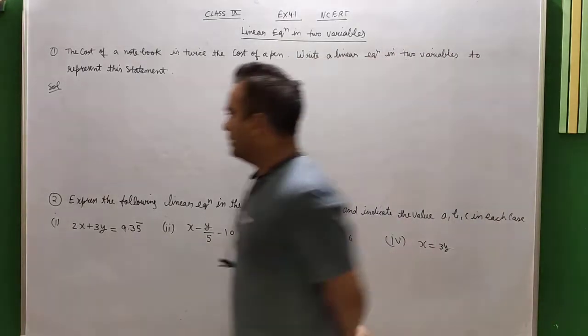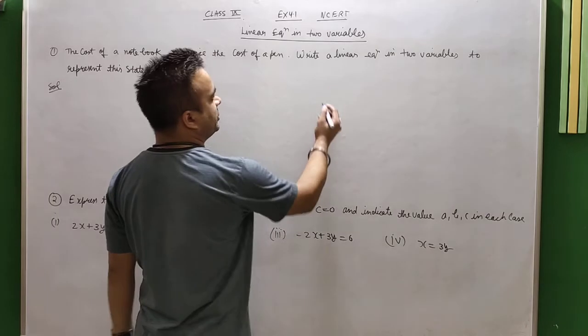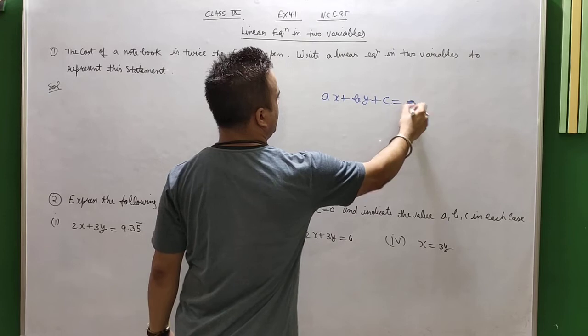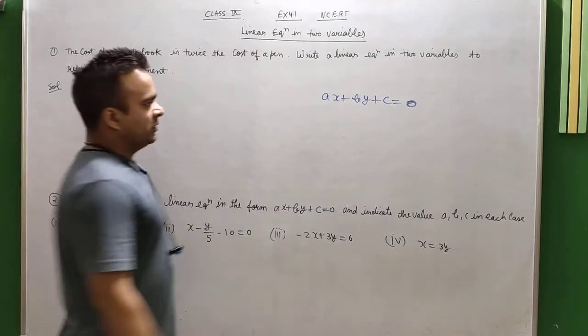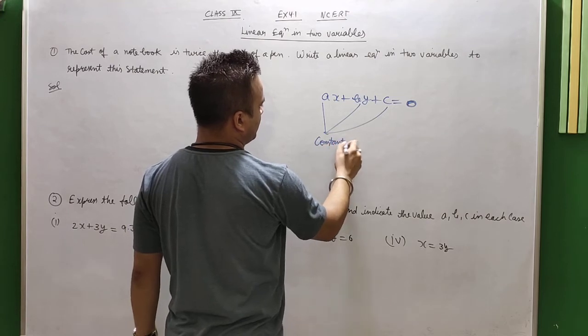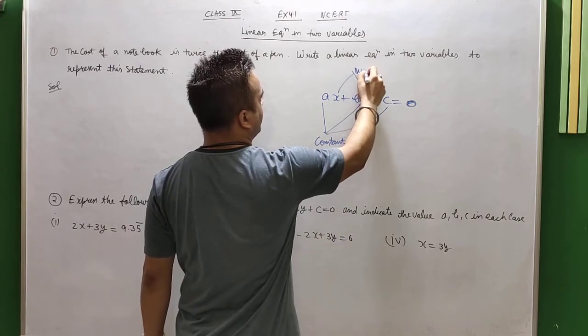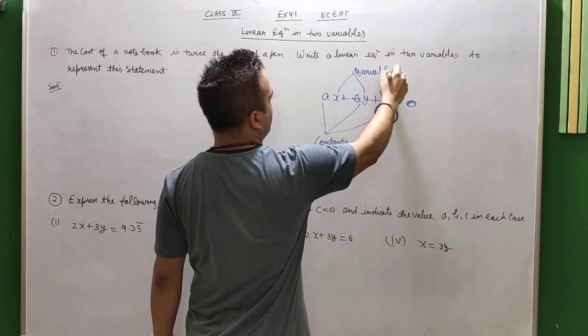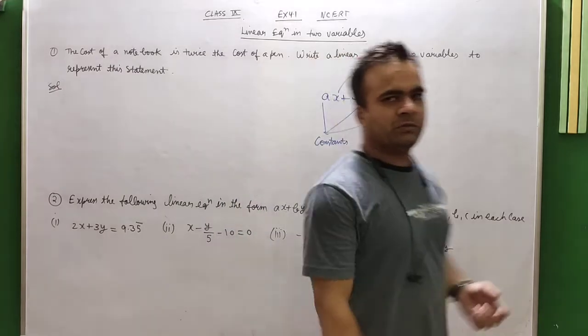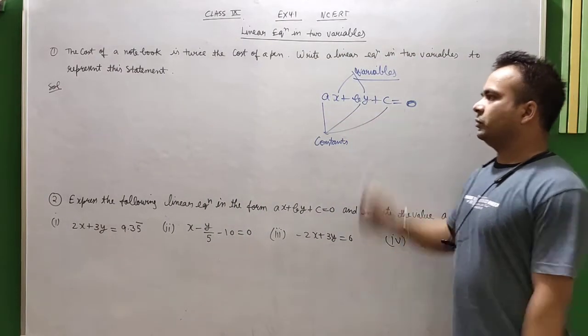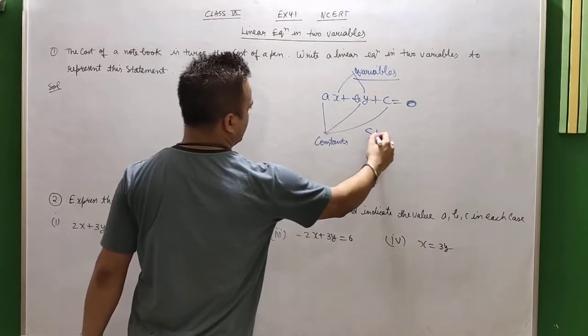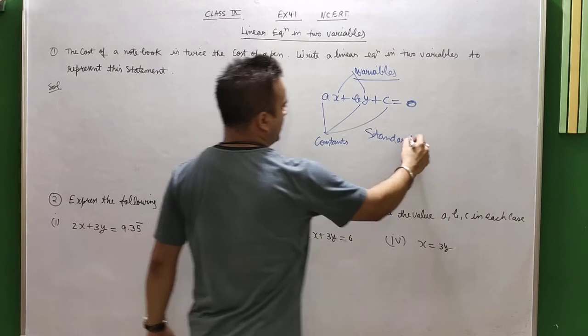And first of all, I will tell you that when you have linear equations in 2 variables, you will have a standard form: ax plus by plus c is equal to 0. In this exercise, a, b, and c are constants and x and y are variables. And always, when you have a statement, you must always represent this particular form. This is the standard form.